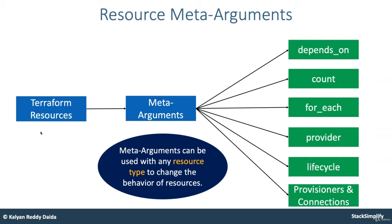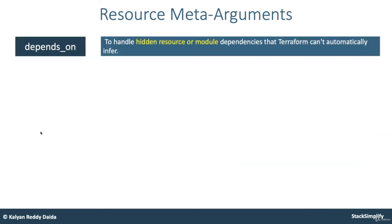On a very high level, let us understand what all these meta arguments are — in the upcoming lectures we are going to see each one separately. Let us start with depends_on. To handle hidden resource or module dependencies that Terraform cannot automatically infer, we can use the depends_on meta argument to implement these dependencies.